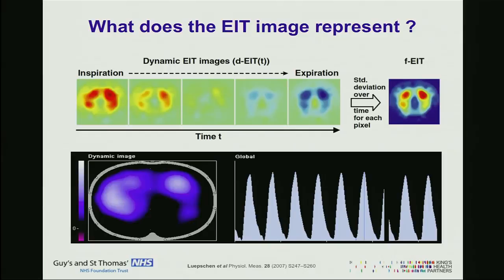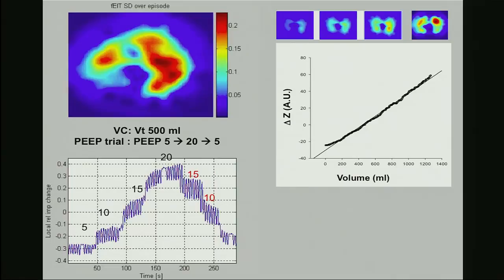The changes in impedance in EIT are linearly related to tidal volumes or volume changes. We can calculate two clinically relevant changes in volume. One is the change in impedance due to tidal ventilation, corresponding to the changes in volume for each breath — compressed over time — which corresponds to tidal volume. These are called tidal variations, because we can't precisely assign a volume for a region of the lung with this technique. We can also find out end expiratory lung volume.